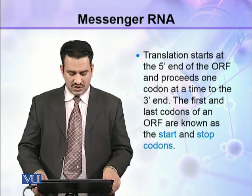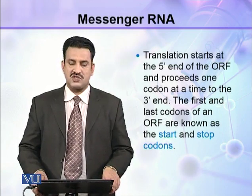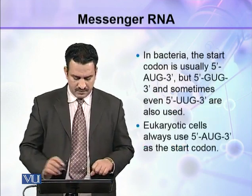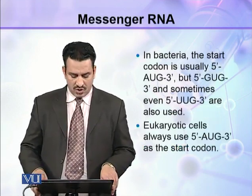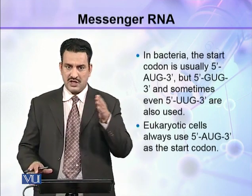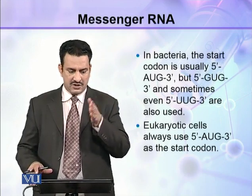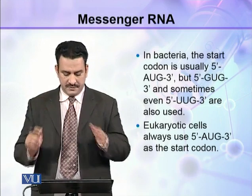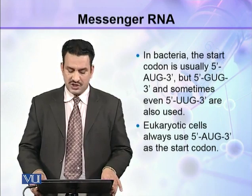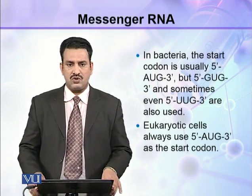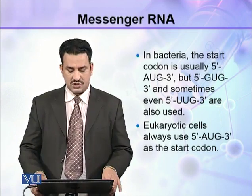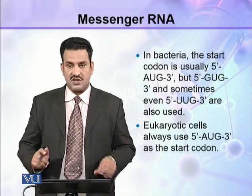The first and last codons of an ORF are known as the start codon and stop codon. In bacteria, the start codon is usually AUG, though GUG and UUG can also act as start codons. Eukaryotic cells always use AUG as the start codon.